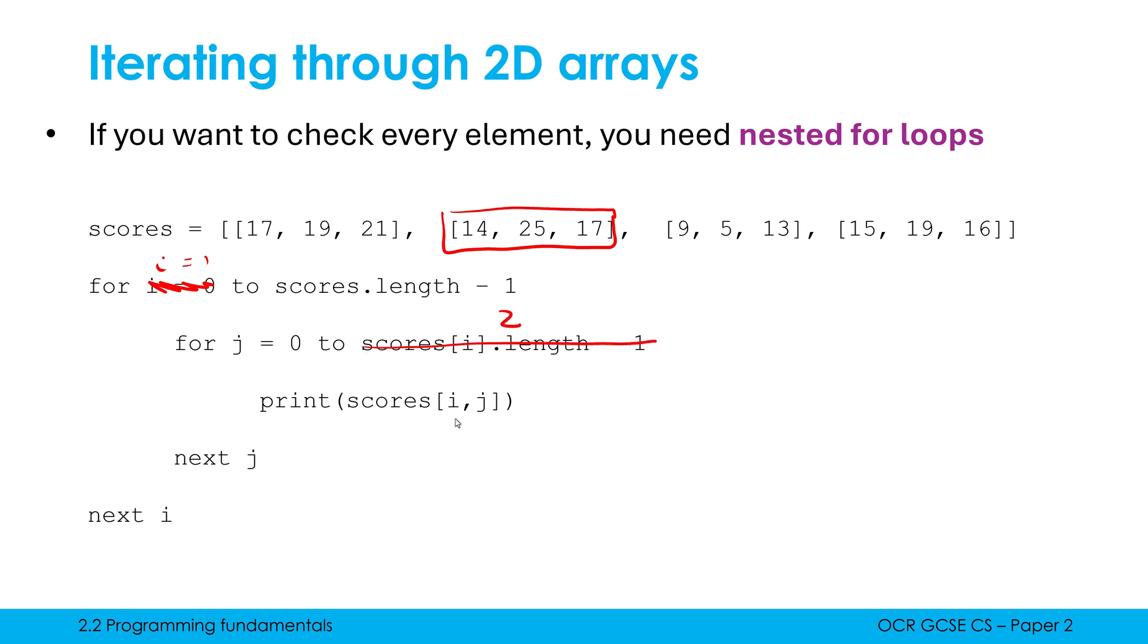In this code this is still going to give us 2 because the length is 3 minus 1 is 2. So the first time this print line runs, i is now 1, j is now back to 0. The scores index 1 comma 0 is going to refer to 14. So we print 14. j then becomes 1. We now print 1 comma 1. This is now going to be 25 and so on and so on. So when I run it, we just get all of our elements printed out one by one in the order in which they are presented in the 2D array.